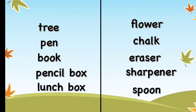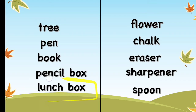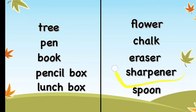Now if you look at these words here, we have the words tree, pen, book, pencil box, and lunch box. And on the right side, I have flower, chalk, eraser, sharpener, and spoon.